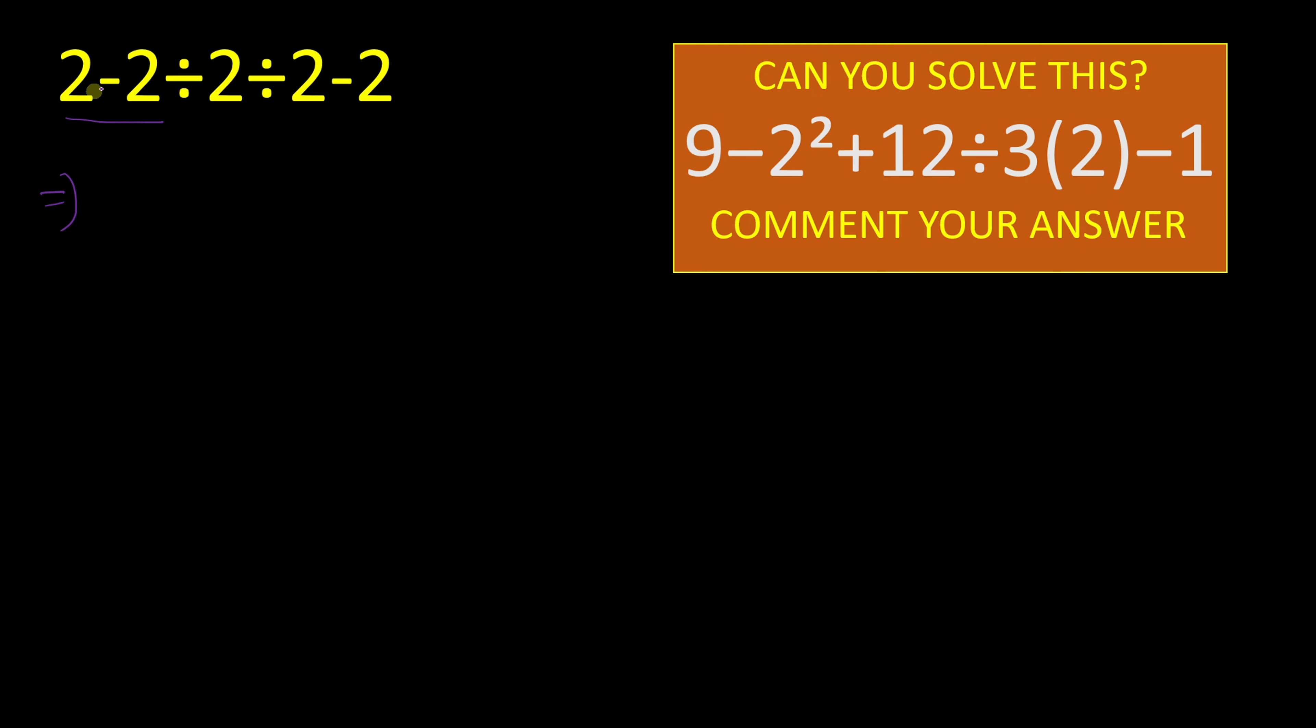So many are solving in a very wrong way. They have solved from this 2 minus 2 which gives result 0, and 0 divided by 2 that is 0, and ultimately they will get minus 2 as answer. But this is not the right answer.